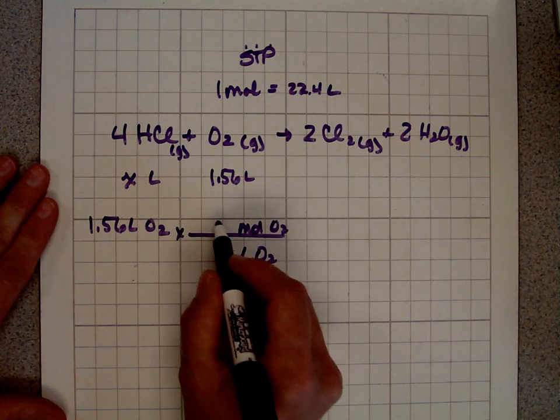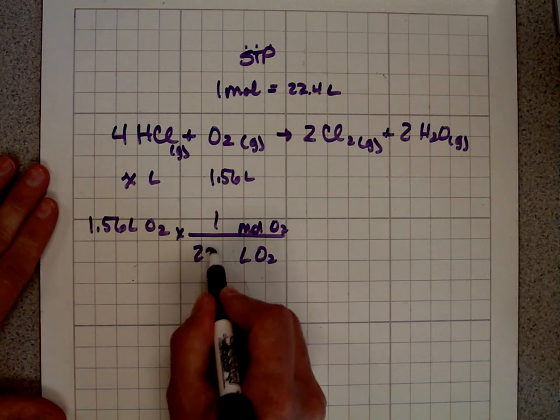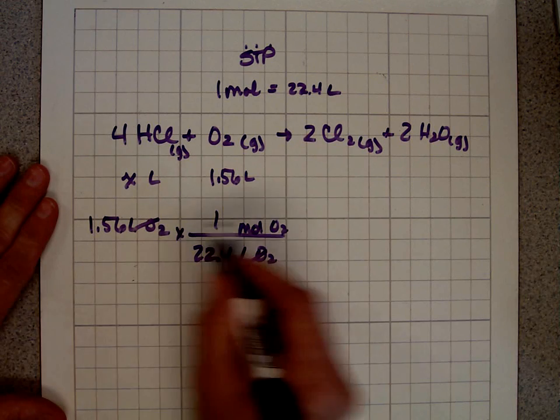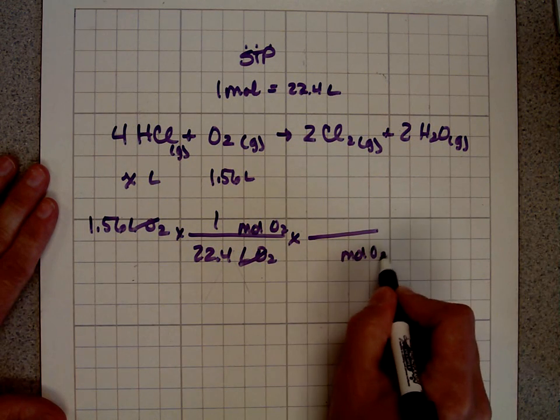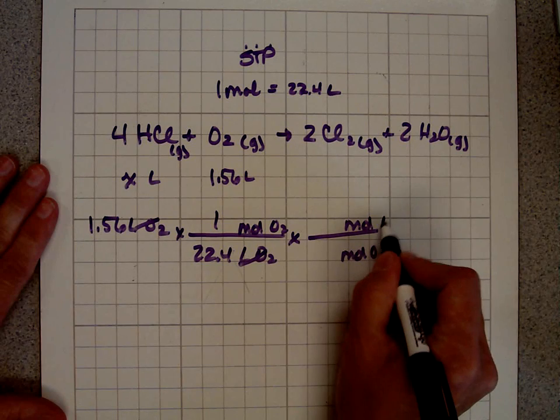So, using my equation up here, I know that one mole of oxygen is 22.4 liters. Then, I'm going to get rid of moles of oxygen. I'm going to be left with moles of hydrochloric acid.